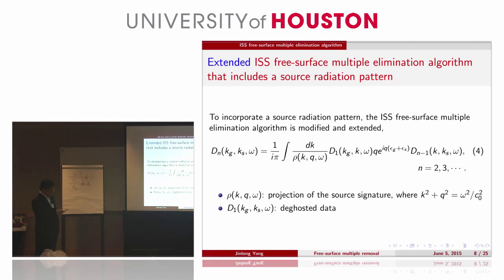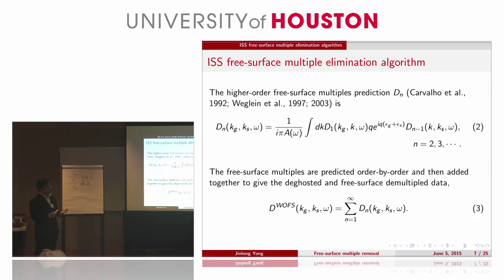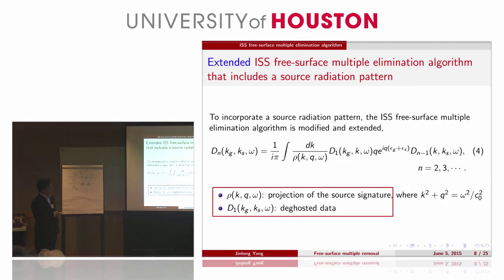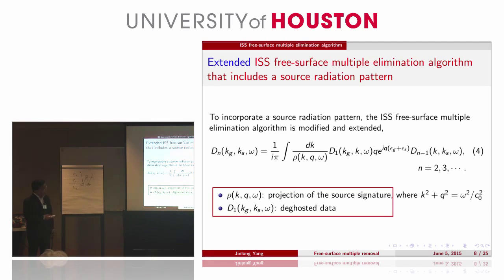You can look at this comparison. This is a point source — an isotropic point source with no directivity. This is the source array with a radiating pattern. In this formula, this is our input. We need the projection of the source signature, and also the ghost data. The key point is how to find the projection of the source signature. It can be derived from our direct wave.